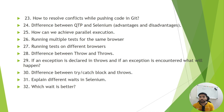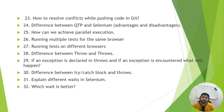Next: difference between QTP and Selenium, advantages and disadvantages. How can we achieve parallel execution — running multiple tests for the same browser or running on different browsers? Difference between throw and throws — if an exception is declared in throws and an exception is encountered, what will happen? How about the try-catch block versus throws — have you used that and how? Maybe the interviewer will ask you to write the implementation of throw and throws.